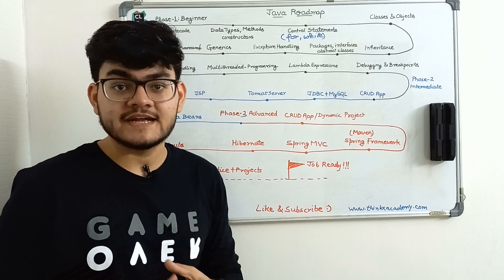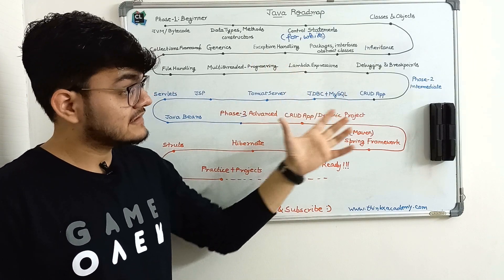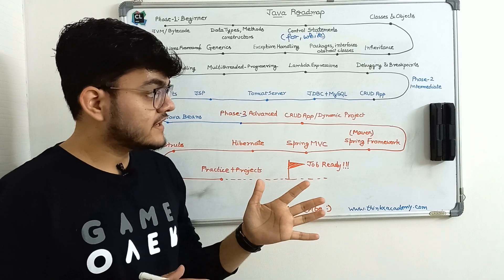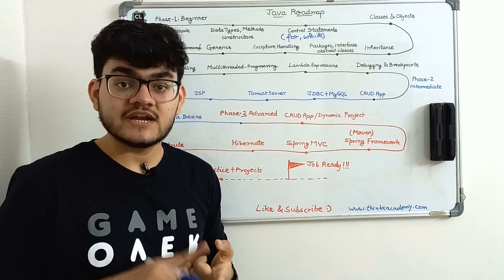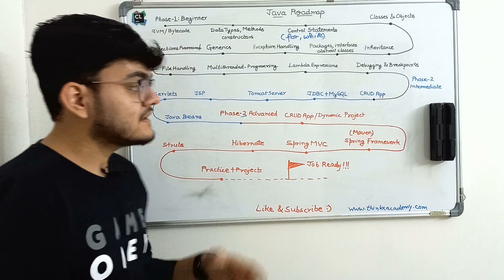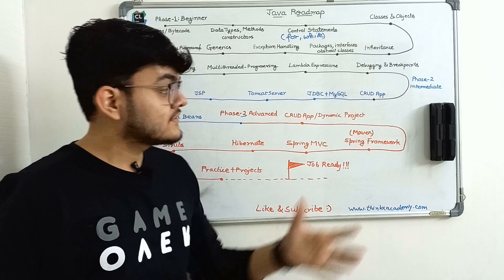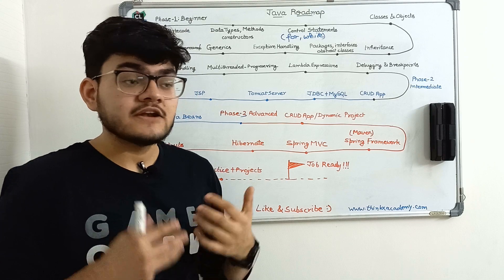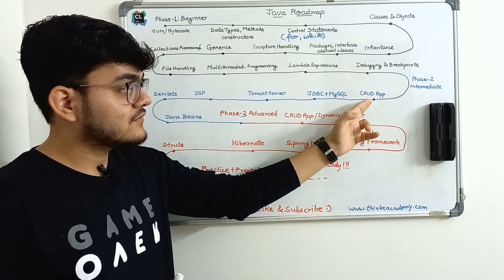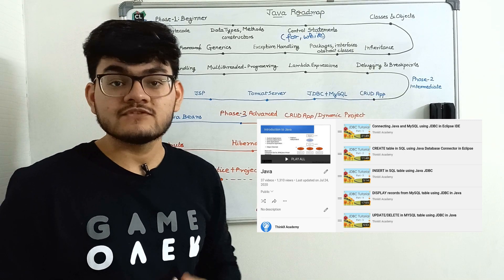Let's move on to phase two, which is the intermediate phase. This phase is very important because it links the beginner and advanced phases. After completing the basics, this is your step to move to advanced Java. I've created five videos in the intermediate section, which are related to JDBC and MySQL. In those videos I'm creating a CRUD application — an application where we perform four operations: create, retrieve, update, and delete. It's a very useful app to understand how to create a user interface and connect with a backend database. There are five videos covering each of these operations.